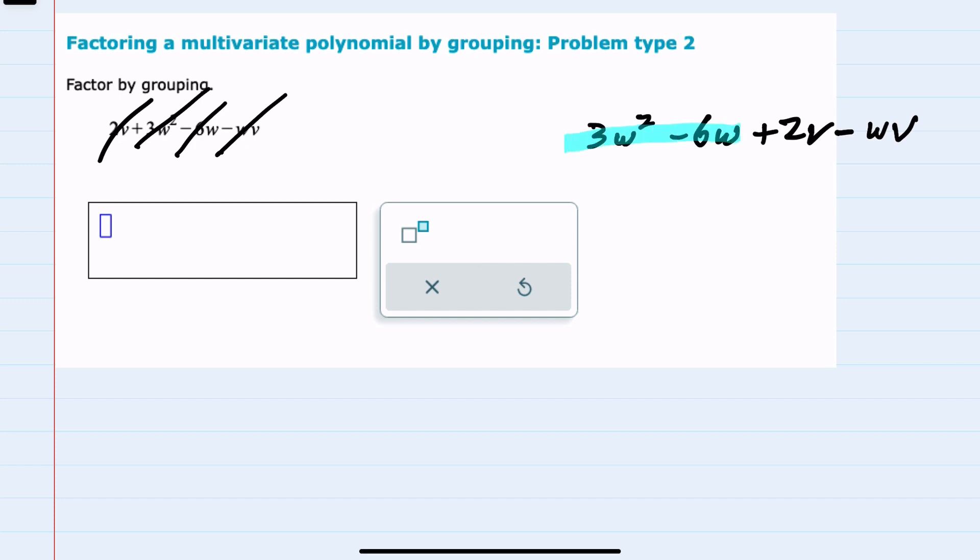So that now, when I do my grouping, looking at the first two, I see that between the 3 and the 6 there's a common 3 that I could factor out. And both of these terms have at least one w, so I could factor out a w.